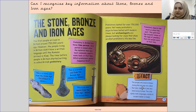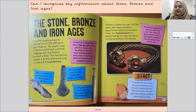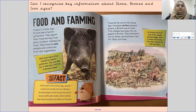The people who lived in Britain during the Iron Age are called the Celts. Groups of Celts also lived across Europe. The Celts spoke Celtic languages similar to modern Welsh or Gaelic.